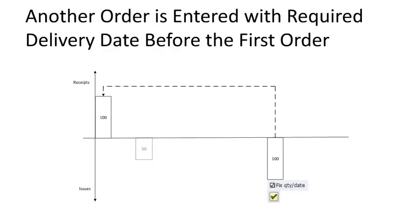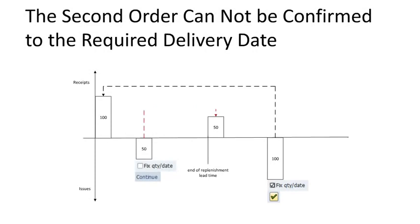Now a new order is placed with a quantity of 50 pounds, requested to an earlier date than the first order. Since we have no more open ATP quantities, the order for 50 pounds cannot be committed or delivered to the customer's requested delivery date. Therefore we do not confirm the order — that is done by hitting the Continue button. We also do not fix the quantity and date. Since we did not fix the date, the demand is transferred to MRP and the planning run will generate a planned order to receive 50 pounds after the replenishment lead time. Note that the second order is now late.